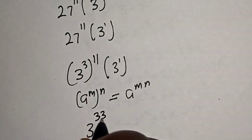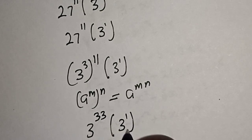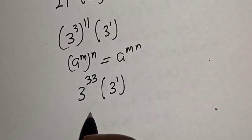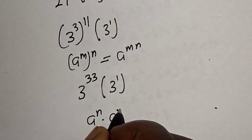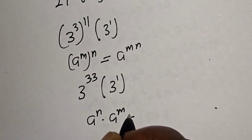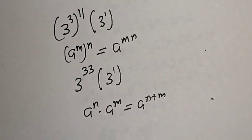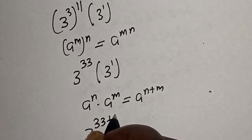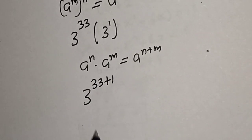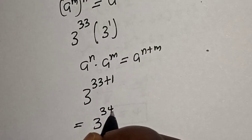Multiplied by 3 raised to power 1. Also take note of this rule: if you have a raised to power n multiplied by a raised to power m, this is equal to a raised to power n plus m. Then this is 3 raised to power 33 plus 1, so this is 3 raised to power 34.